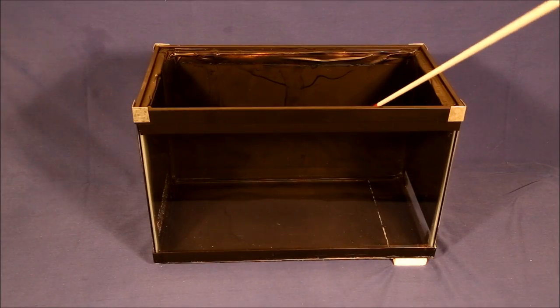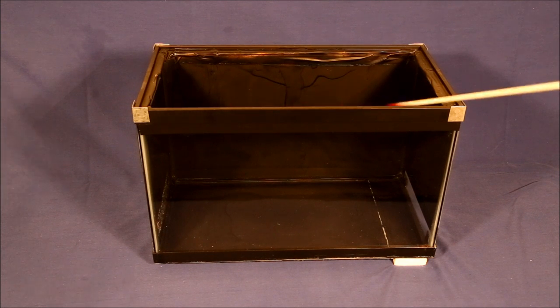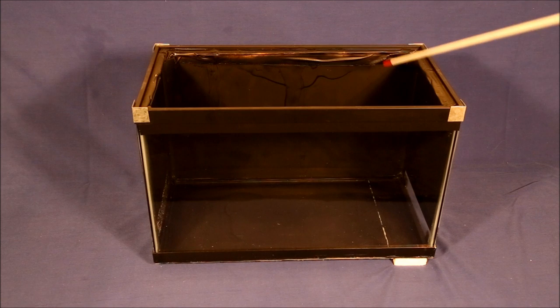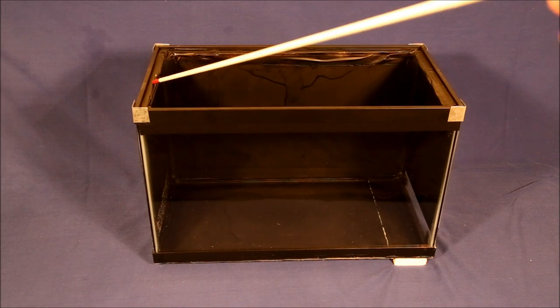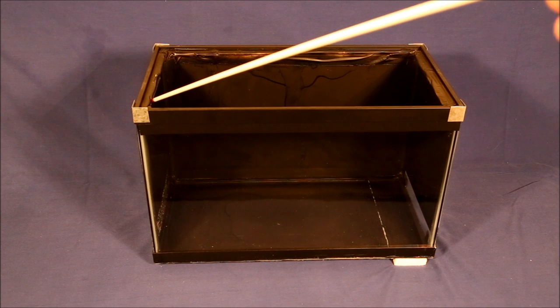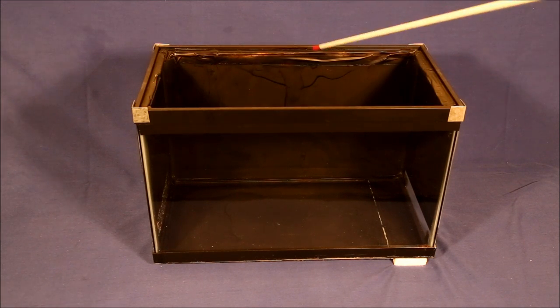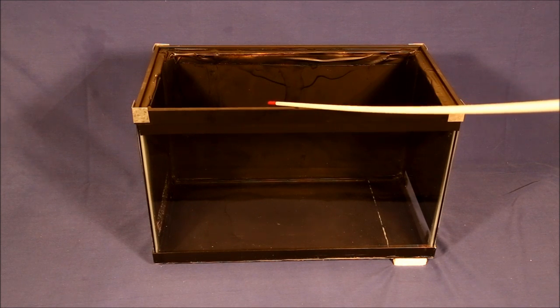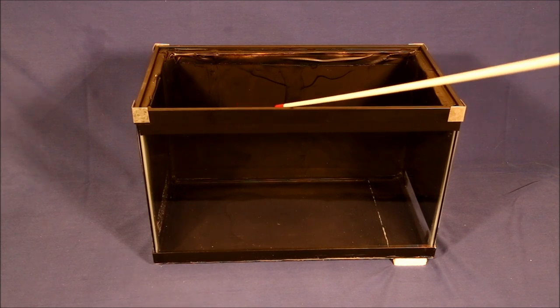Take a 10 gallon aquarium and remove the bottom sheet of glass. Be very careful when doing this. It's very difficult to do without leaving sharp pieces of glass that can be very dangerous. Once you've done that, coat it with several layers of duct tape to prevent any glass from poking through. This will become the top of the cloud chamber.